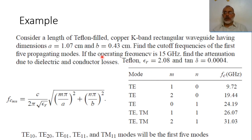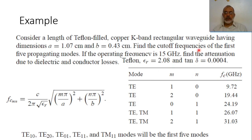At an operating frequency of 15 GHz, which is greater than 9.72 GHz and less than 19.44 GHz, the only propagating mode is TE 1-0. It is required to obtain the attenuation due to dielectric and conductor loss.